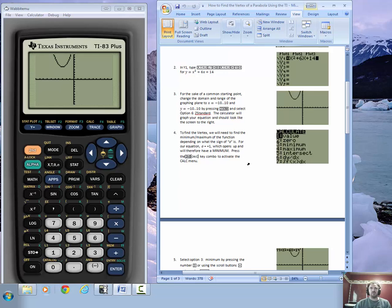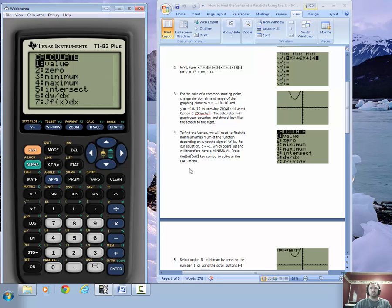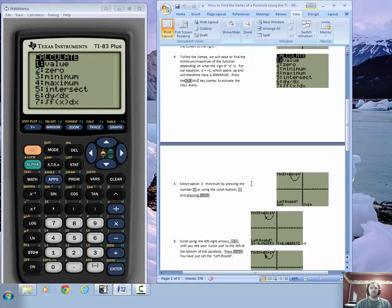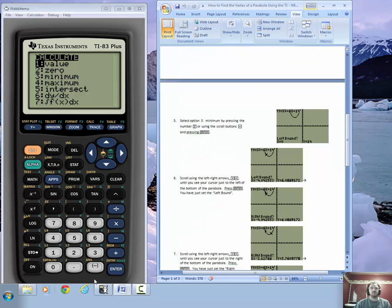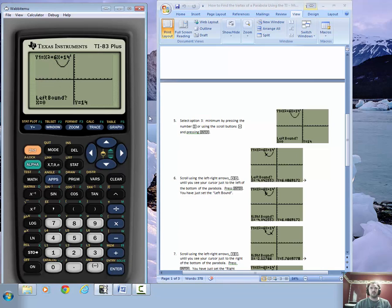So what we're going to do is we are going to press the second key, and then we're going to press the trace button to activate calculating. You'll see this screen that's shown over here on the piece of paper. And then we want to press option 3. So you can either press the number 3, or you can scroll down and press enter.